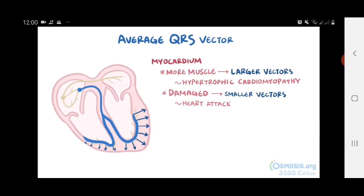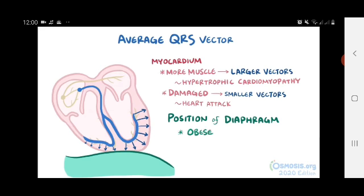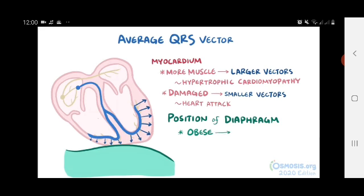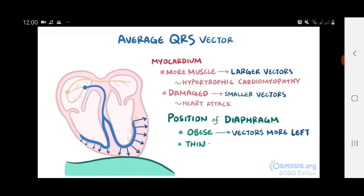Another thing that can affect vectors is the position of the diaphragm, which is usually sort of sitting right up against the heart. In obese people, the diaphragm gets pushed upward, which rotates the heart further to the left. And in thin individuals, the diaphragm lowers, which rotates the heart a bit the other way.